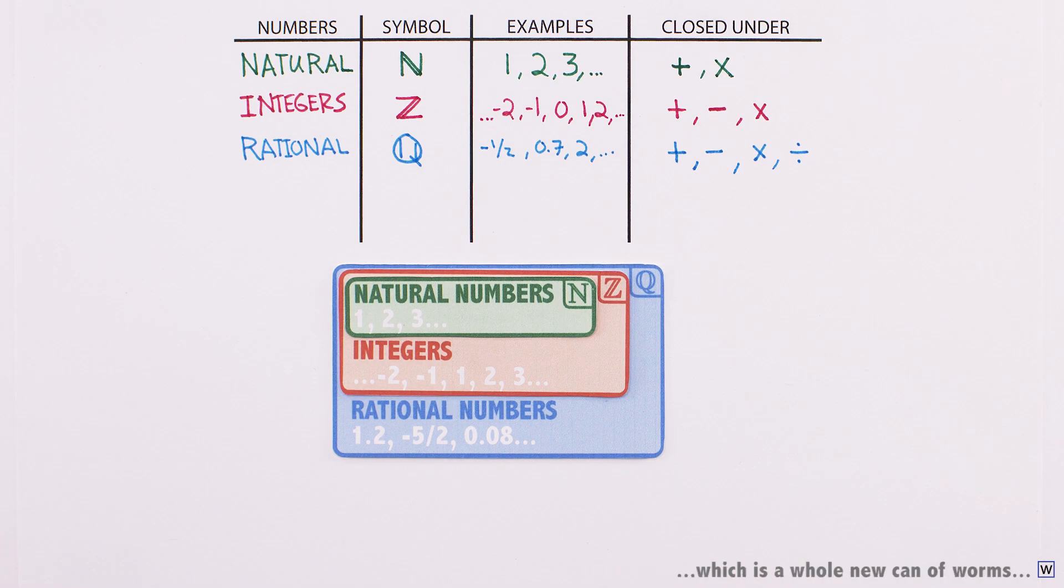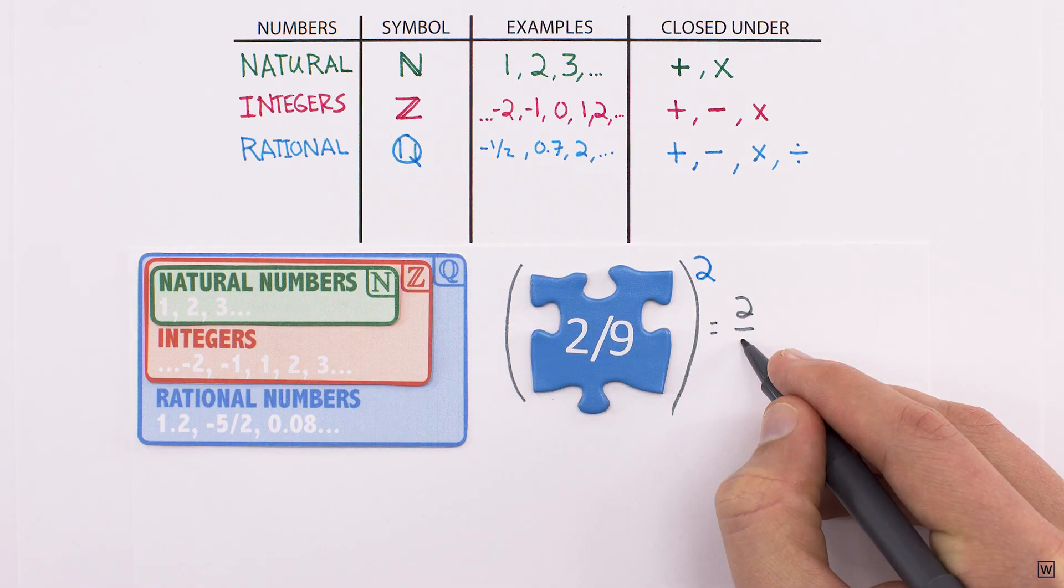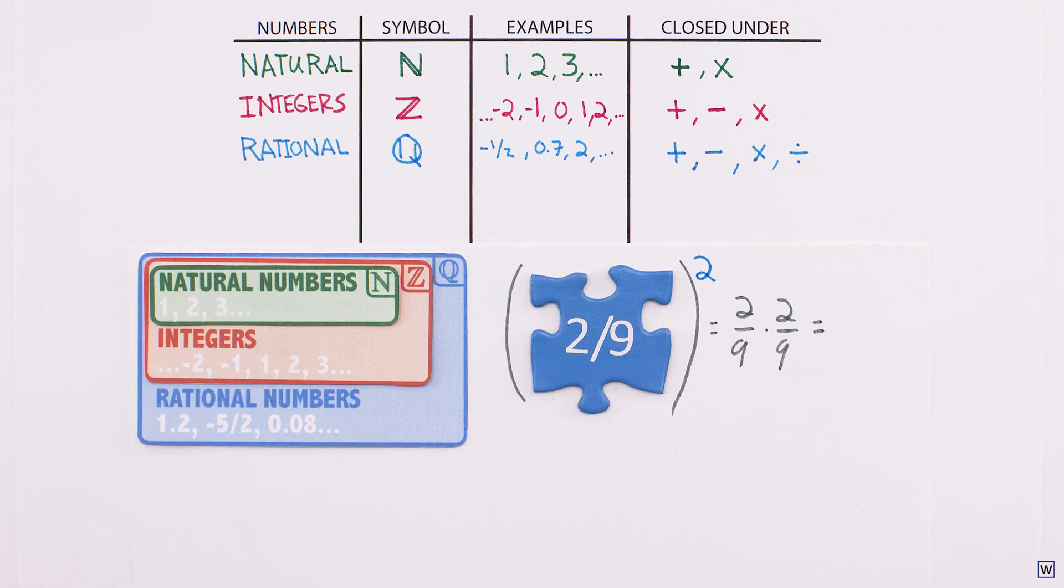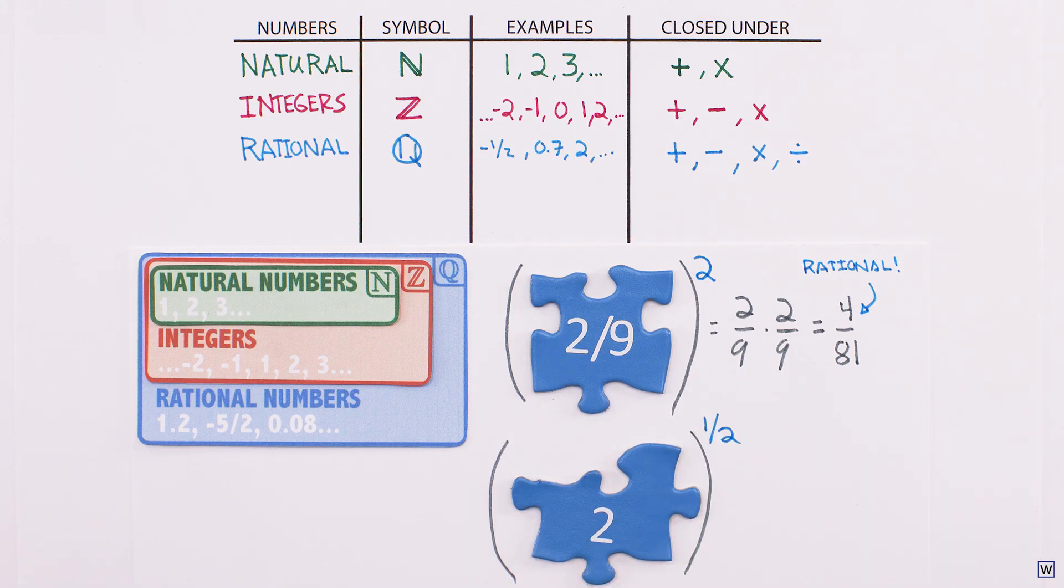Now, what about powers and roots? Does a rational number raised to a rational power always yield a rational result? It turns out that for problems like 2 ninths to the power of 2, this is no problem. Our result is rational. Where we get into trouble are problems like 2 to the power of 1 half. Raising something to the power of 1 half is the same thing as taking the square root, so this is equivalent to the square root of 2. We'll save the full argument for another day, but it turns out that root 2 is not rational.